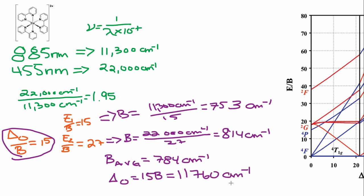Using the Tanabe-Sugano diagram, we determined that this is a high spin d⁷ species with an octahedral splitting energy Δo = 11,760 cm⁻¹ and a Racah parameter B = 784 cm⁻¹.